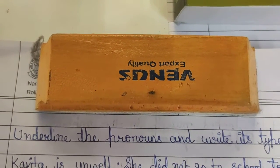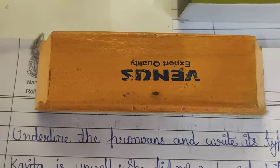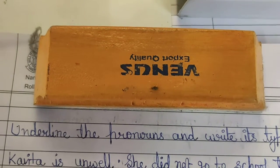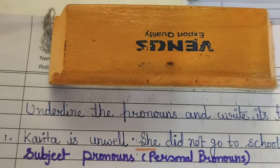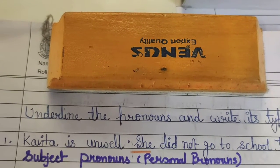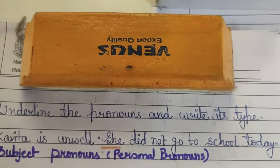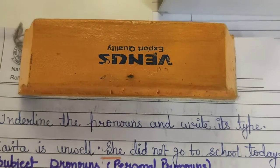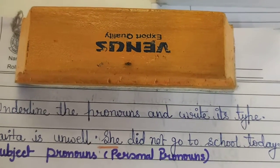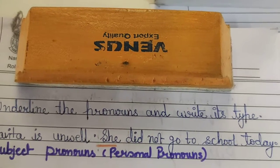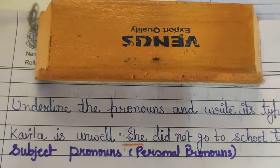Now 'she' is always a personal pronoun, but within personal pronouns, I have told you about subject pronoun and object pronoun. We will check what type of pronoun it is — it is a subject pronoun. How do we know? The pronouns which act as the subject or the doer of the sentence. 'She did not go to school today' — she is the doer, so it comes under the category of subject pronoun.